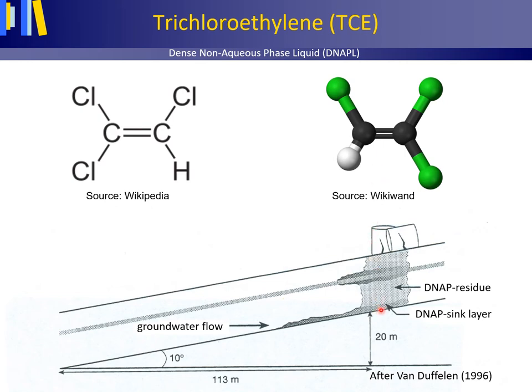A DNAPL will tend to sink through the groundwater column until it encounters an impermeable layer in the subsurface. When the impermeable layer is tilted, as for instance in an ice-pushed ridge, the DNAPL will sink further along the dip of this impermeable material, independent of the direction of the groundwater flow — thus not necessarily with the groundwater flow. In lawsuits regarding who is responsible for polluting the subsoil with TCE or another DNAPL, this should be taken into account.